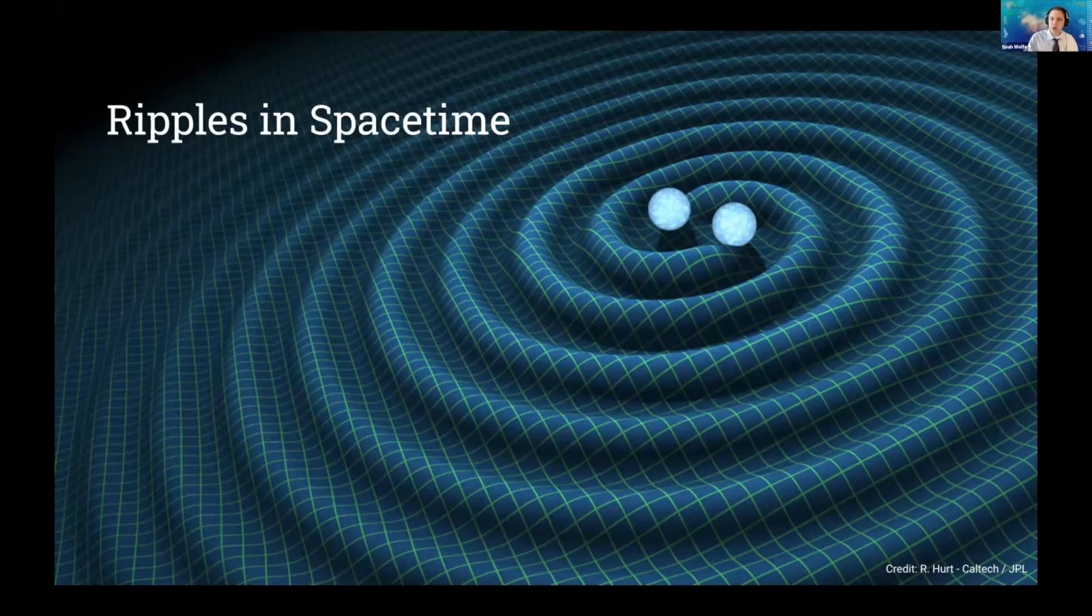Now, by the time these waves reach Earth, they're very, very, very tiny, causing space to stretch and squeeze on the order of one one-thousandth of a proton. So incredibly small distances. And that means they're pretty hard to detect, but not impossible.